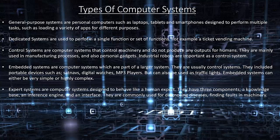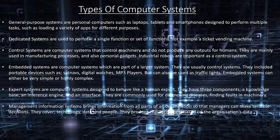Expert systems are computer systems designed to behave like a human expert. They have three components: a knowledge base, an inference engine, and an interface. They are commonly used for diagnosing diseases and finding faults in machinery. Management information systems bring information from all parts of an organisation so that managers can make sensible decisions.